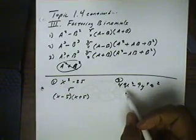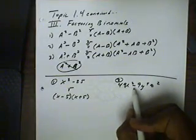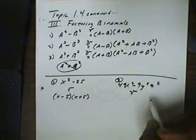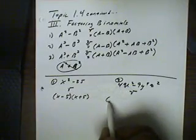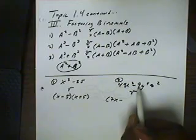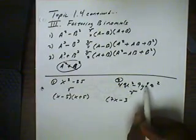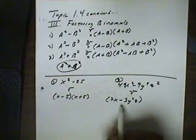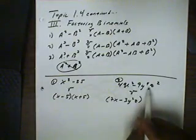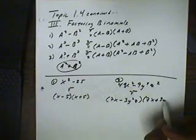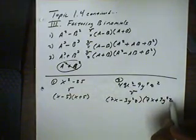Next: 49x squared minus 9y to the 4th z squared. This also looks like the difference of two squares. The square root of 49 is 7, the square root of x squared is x, the square root of 9 is 3, the square root of y to the 4th is y squared, and the square root of z squared is z. All are perfect squares, so the factored form is (7x minus 3y squared z)(7x plus 3y squared z).